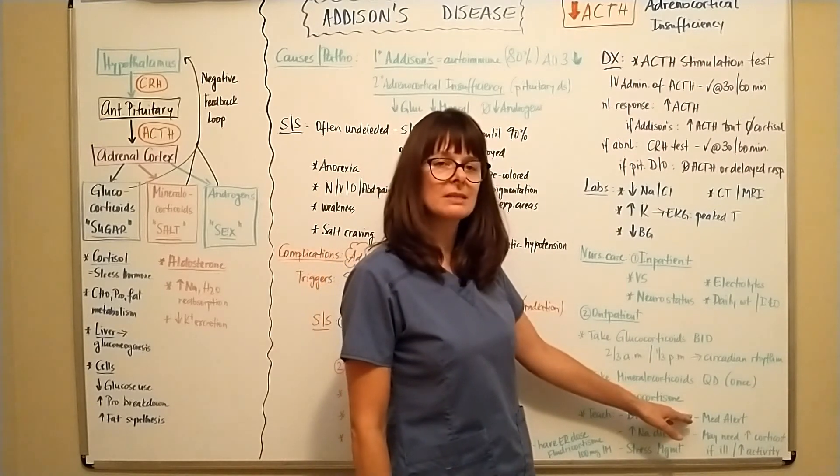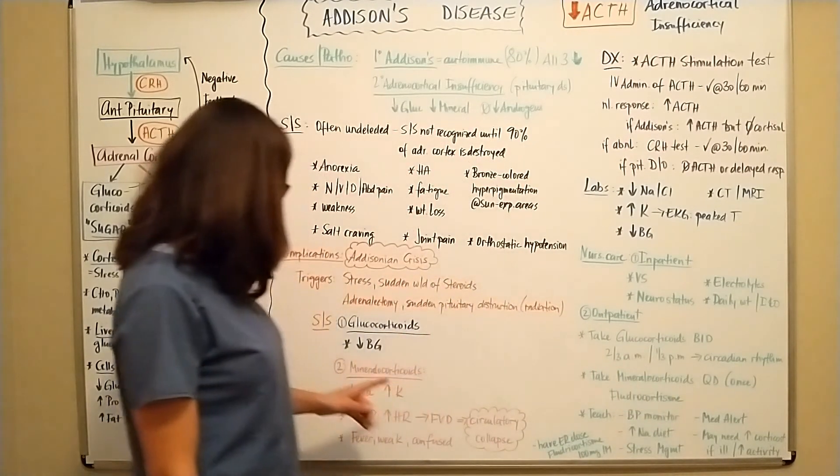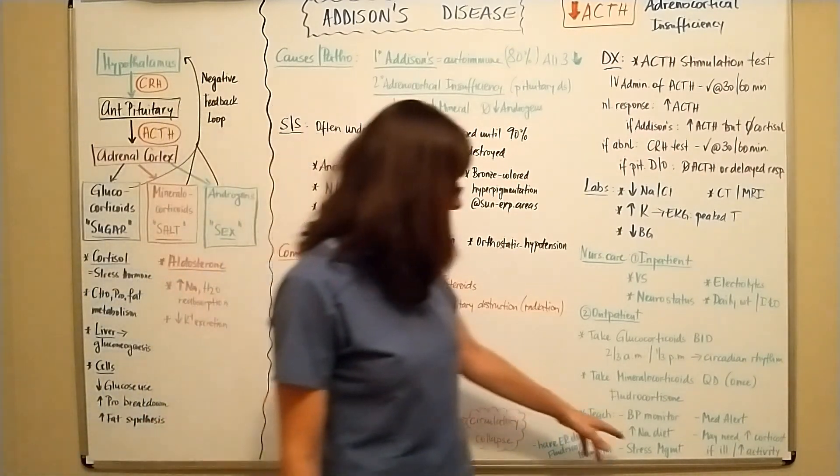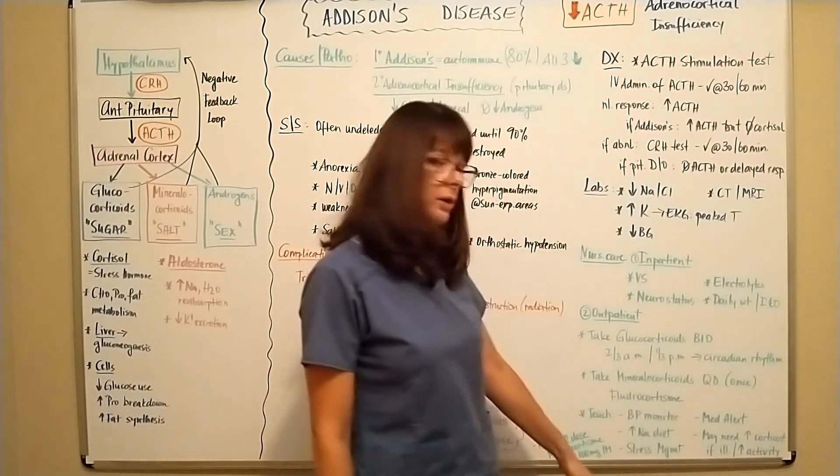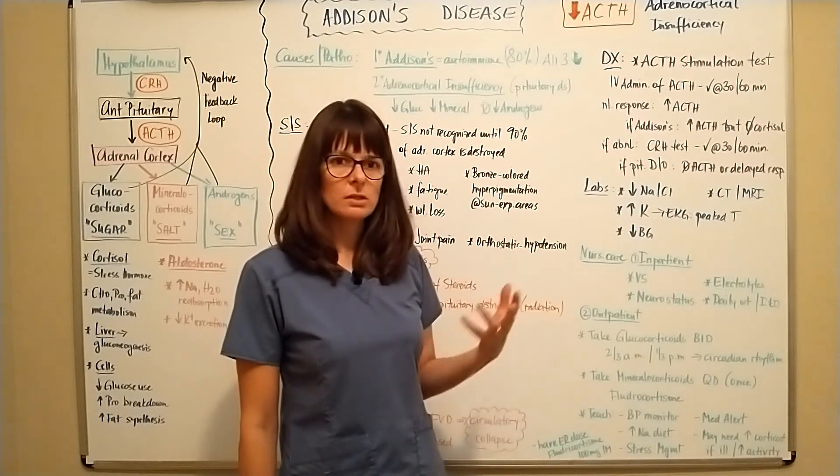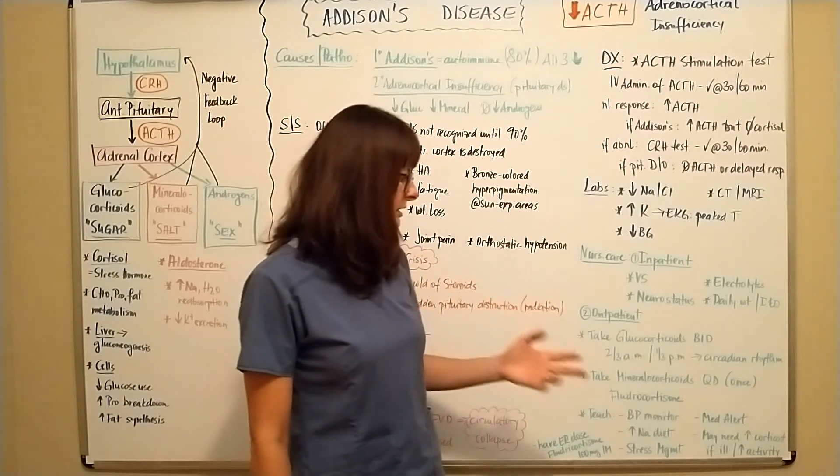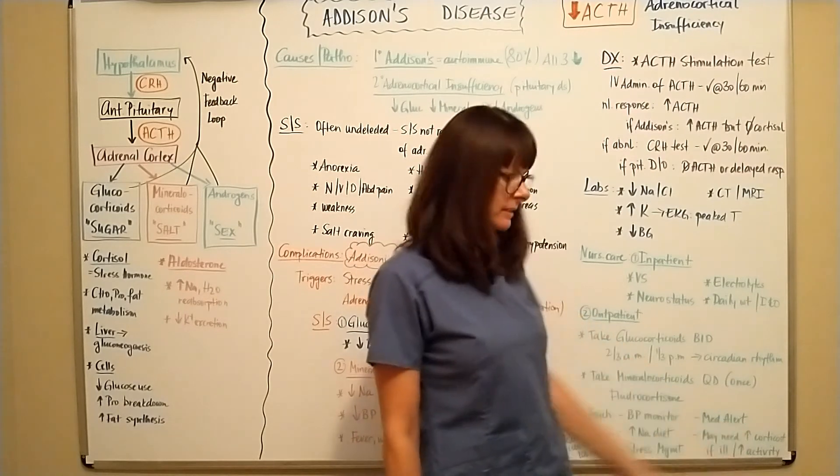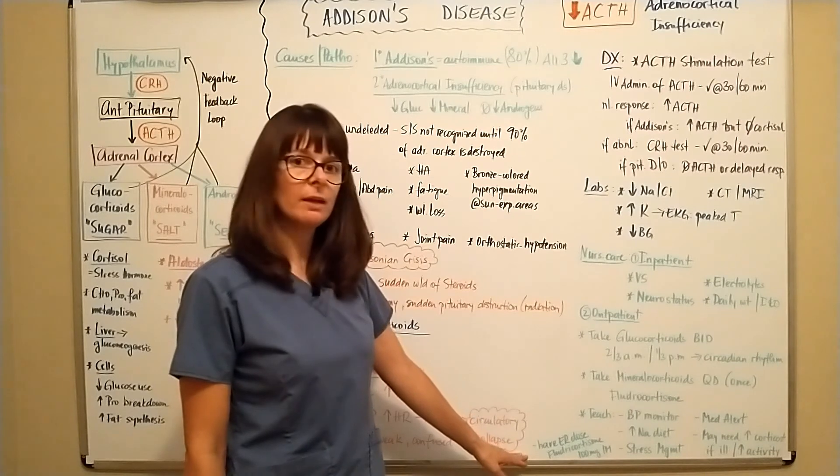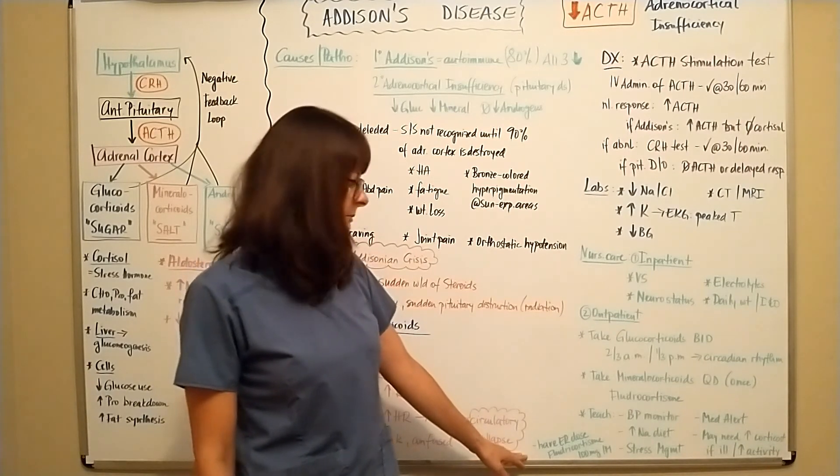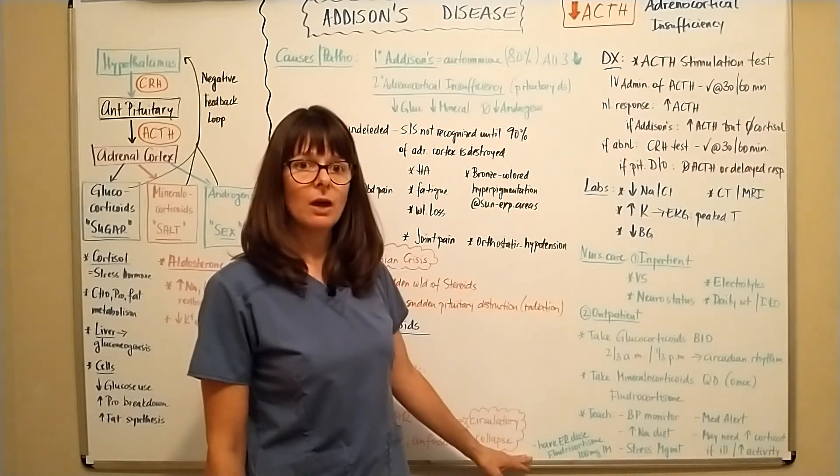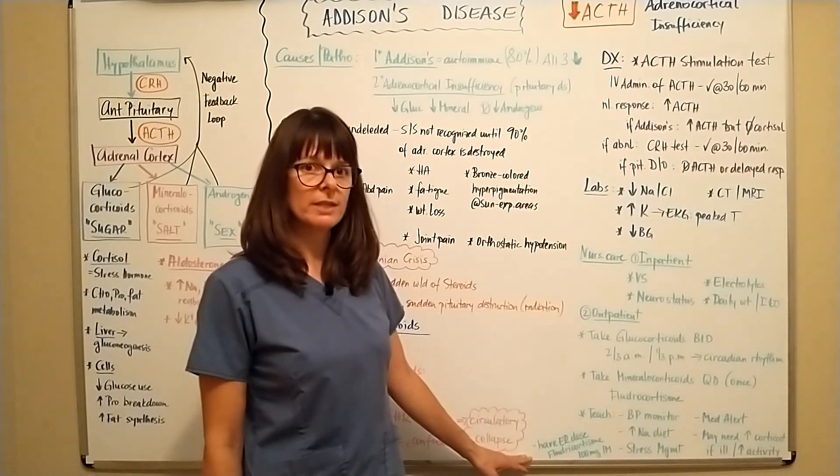to manage their stress, to wear a medical alert bracelet. Very important because we know that they can go into Addisonian crisis with increased stress and they might need increased corticosteroids if they are ill with a minor illness such as the flu or with increased physical activity. And then they should also have an emergency dose of fludrocortisone available and that is usually 100 milligrams that they would be able to administer intramuscularly in case that they are detecting that they are at risk for Addisonian crisis.